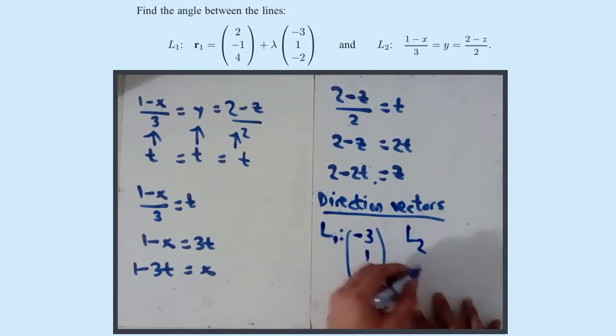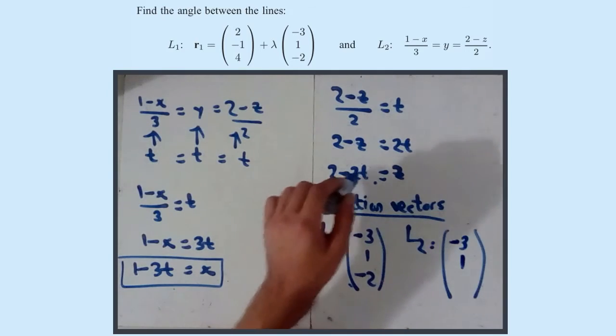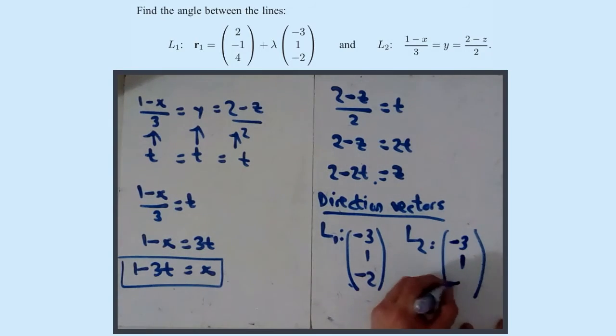For L2, it is basically what we've found in terms of t. So for x's, it's -3. For y's, well, we said y was t, so it's just 1, 1t. And for the z's, it's 2 - 2t, so that's just -2.